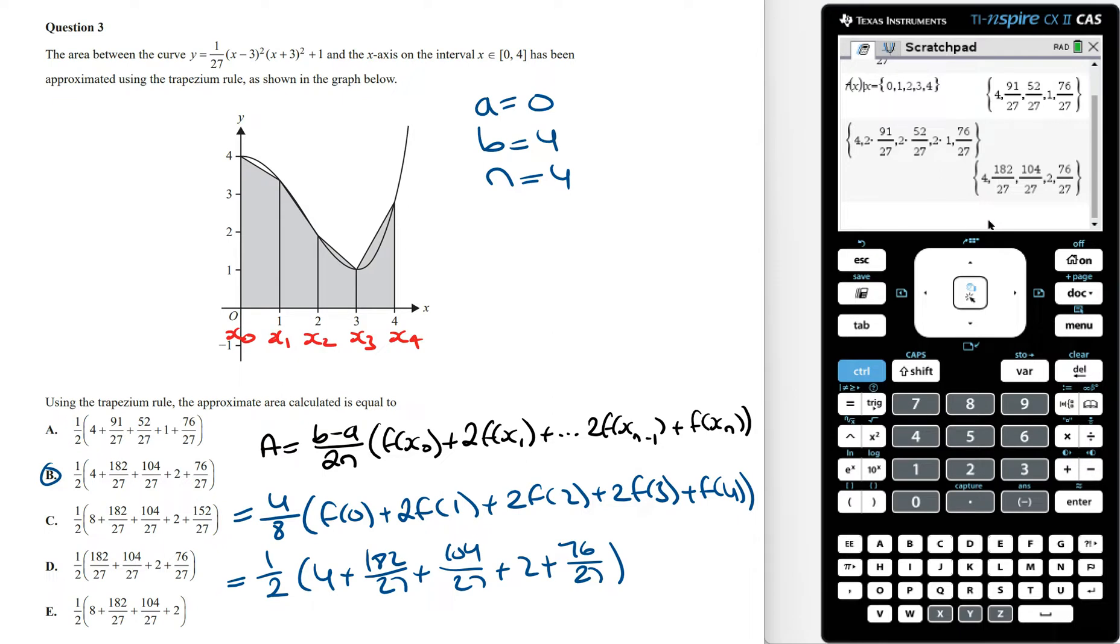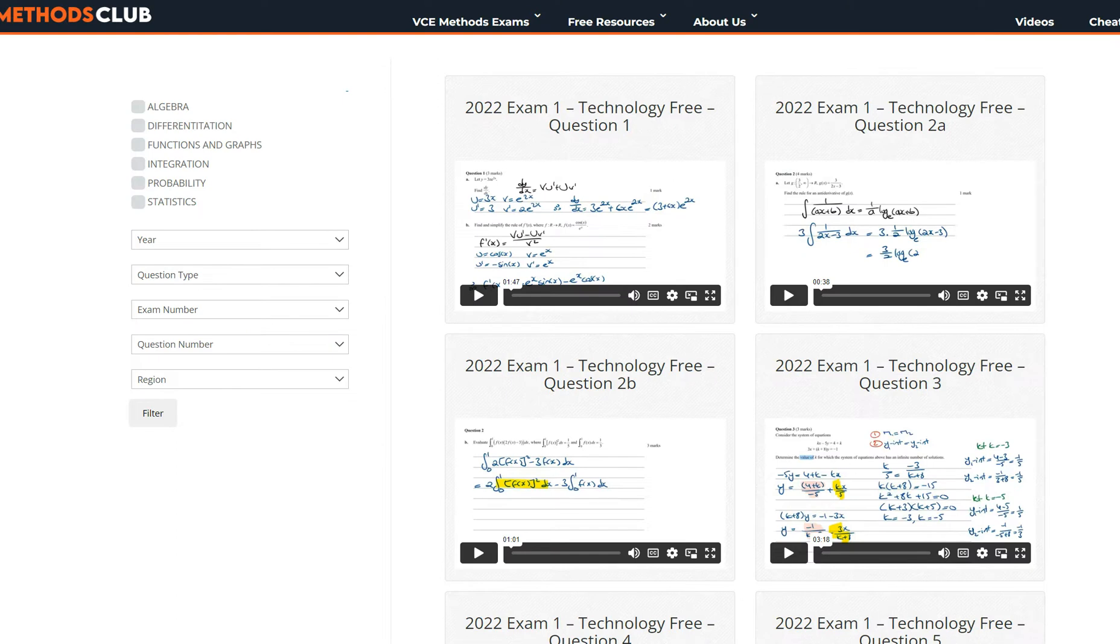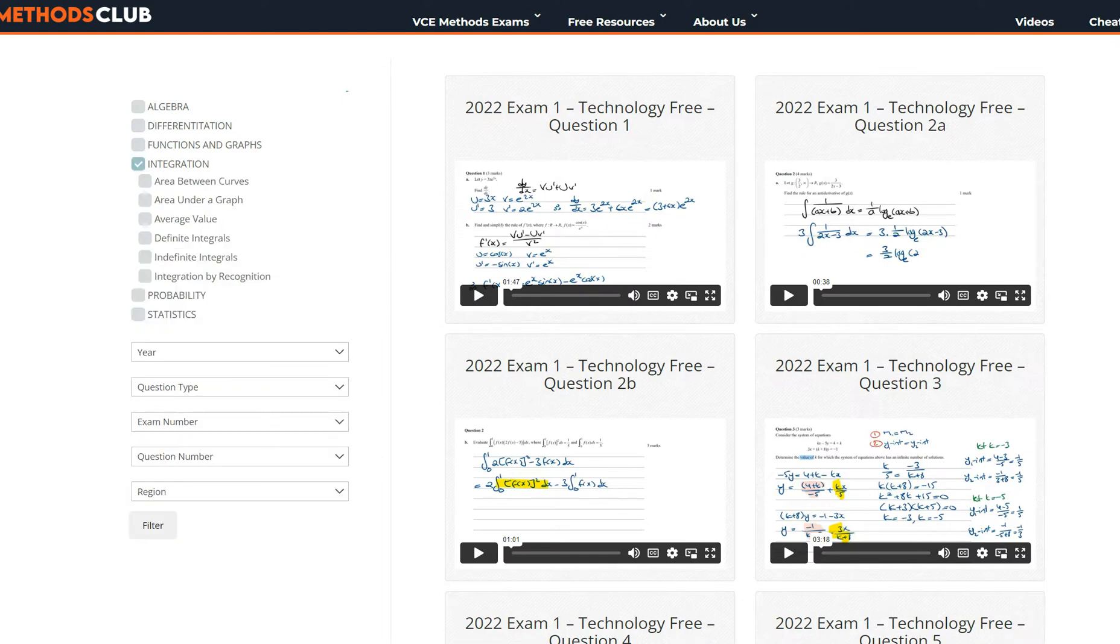Now if you guys want to practice and learn more exam-style questions similar to this one, then join the Maths Methods Club, where you can group past mathematics exam questions by topic. For questions related to finding the area under a graph, click on integration from the main topics, and then from the subtopic, select area under a graph.